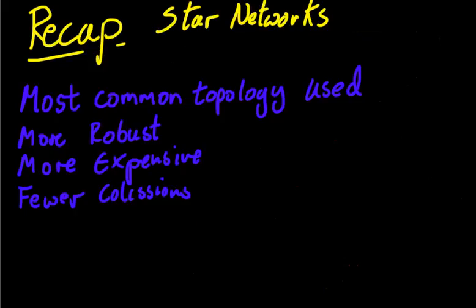So, let's do a quick recap. Star networks, so-called, because they form the shape of a star, with a central area fanning out. This is, nowadays, the most common topology used in local area networks, the local networks we have. It is, by far and away, the most robust. It's less likely to fail. But, it is much more expensive than the older ones. But, it does come, usually, with fewer collisions.